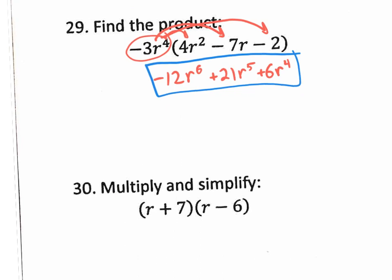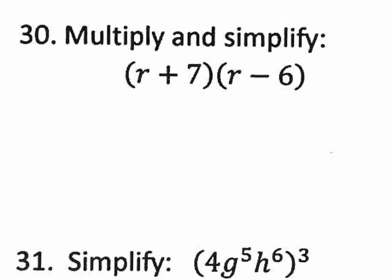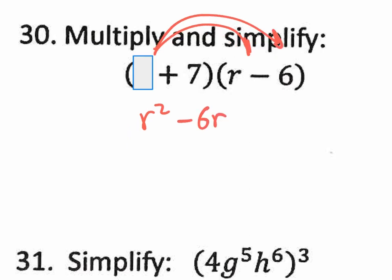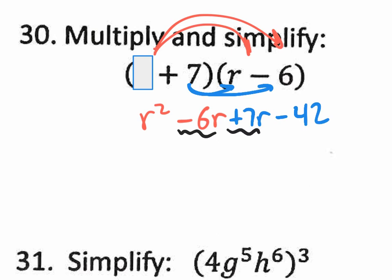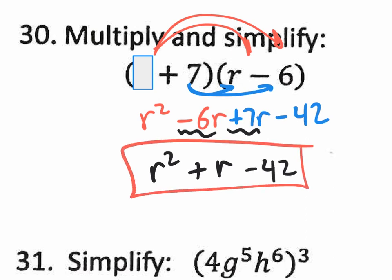Number 30 — another easy question, because all you're doing is distributing one term at a time. Don't get confused with the two terms. Just distribute the r first: r times r is r squared; r times negative 6 is negative 6r. I already moved the box over to cover the r. Now distribute the 7: 7 times r is positive 7r; 7 times negative 6 is negative 42. Combine the middle terms — you end up with positive 1r, or just r. Bring down the r squared and the minus 42. We have distributed.